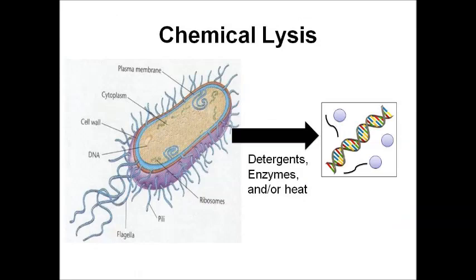Chemical lysis uses detergents, enzymes, and/or heat to destroy cells. Detergents such as SDS — sodium dodecyl sulfate — or guanidine thiocyanate can emulsify the plasma membranes of various cells. Enzymes such as lysozyme can also aid the process, and heat helps catalyze these reactions and melt cells apart.